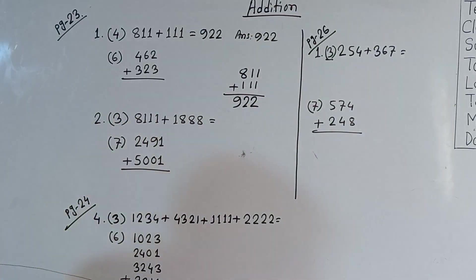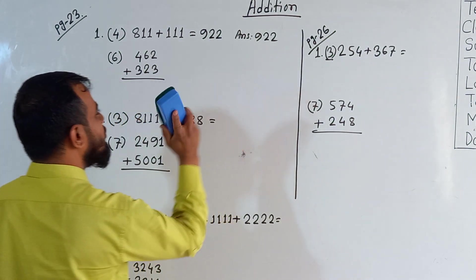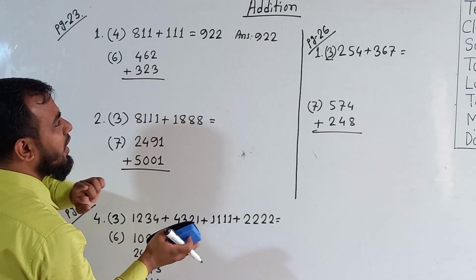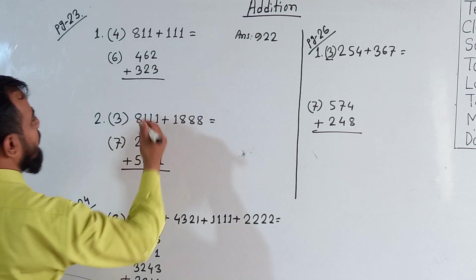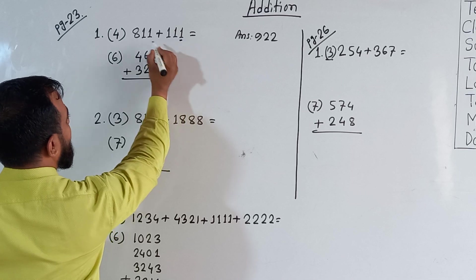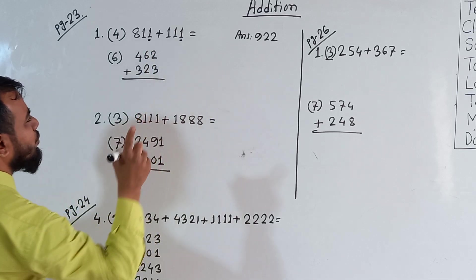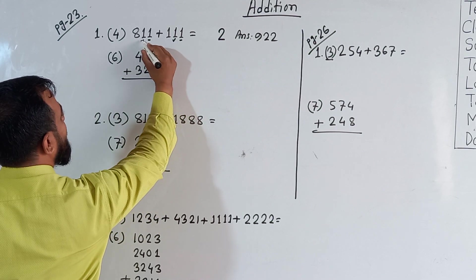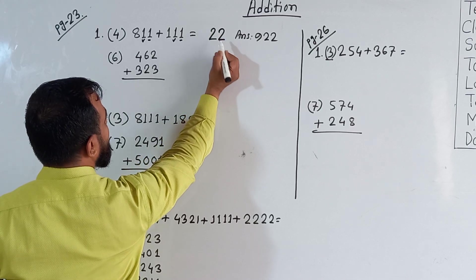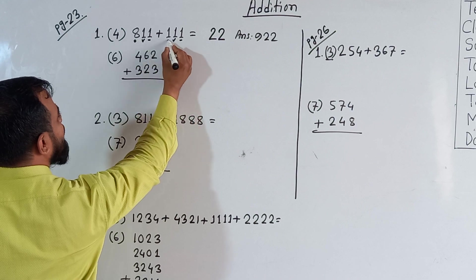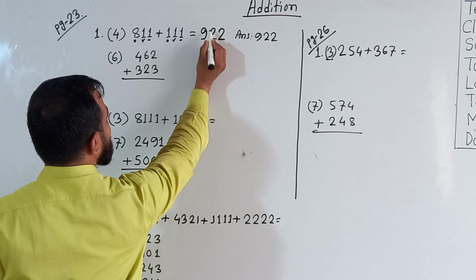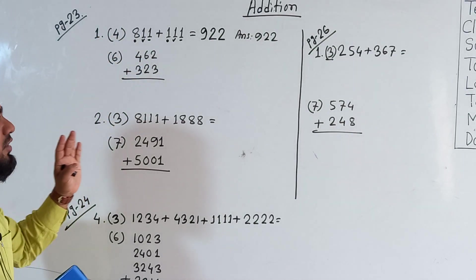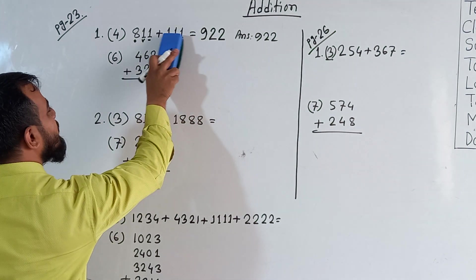Like this way, we can solve problems in horizontal form too. We start from the right side. In the 1's place, we have 1 and 1, which makes 2. In the 10's place, we have 1 and 1 again, which makes 2. In the 100's place, we have 8 and 1, which makes 9. So this also gives 922, the same as the vertical way. The horizontal and vertical ways are similar — we always start from the right side.